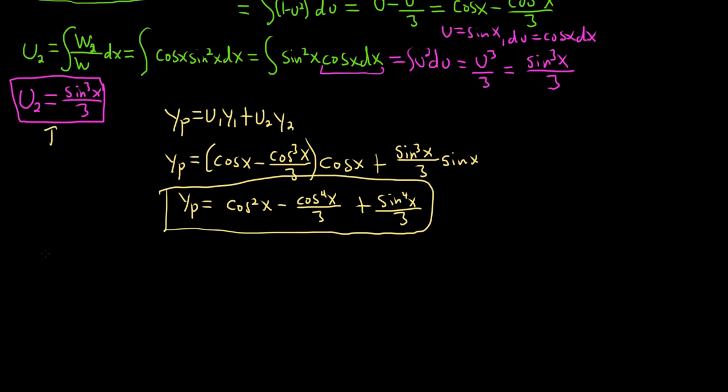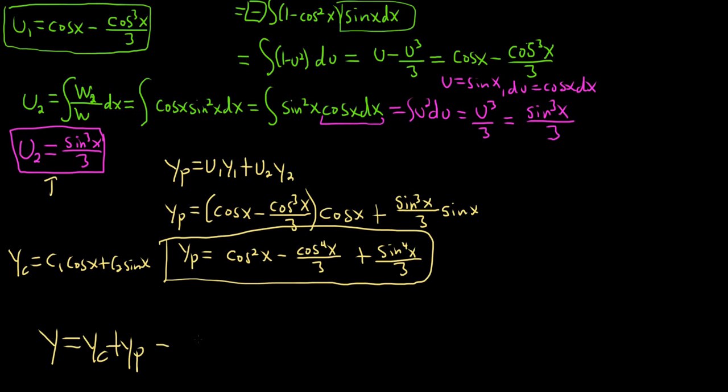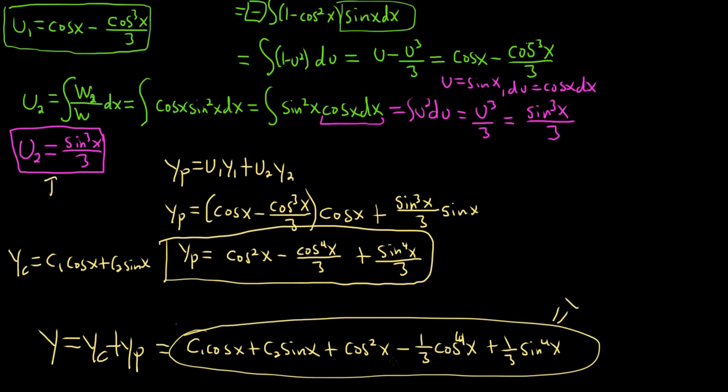So now we have to find the final answer. The final answer is y equals yc plus yp. So yc was c1 cosine x plus c2 sine x. So we just add them up. So we get c1 cosine x plus c2 sine x plus yp, which is cosine squared x minus 1 third cosine to the fourth x and then plus 1 third sine to the fourth x. And that should be good. That should be the final answer. Y is equal to all of this stuff. That's your solution to your differential equation. So I hope this video has been beneficial. Good luck.